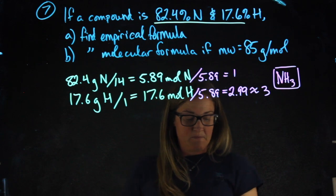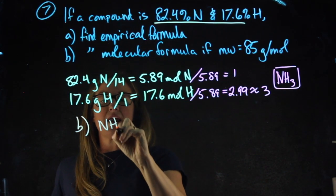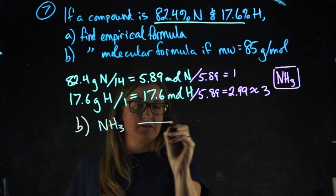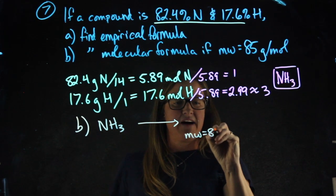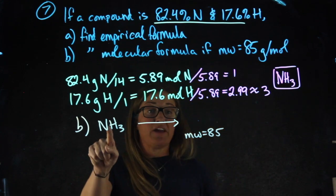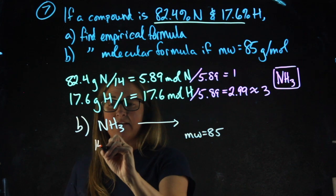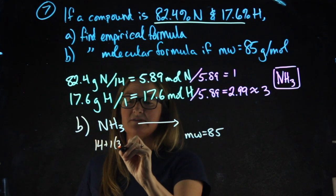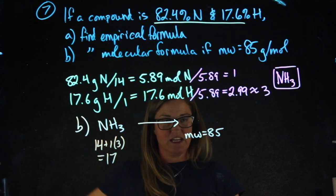For B, I want to figure out what I need to do to NH3 to turn it into something with a molecular weight of 85. I figure out what the molecular weight is of NH3. 14 plus 1 times 3, or 3 times 1, tells me NH3 has a molecular weight of 17.